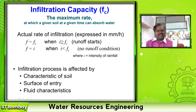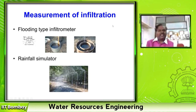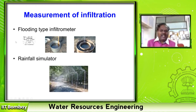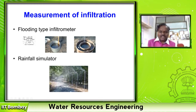Infiltration process is affected by characteristics of the soil, surface entry, and fluid characteristics. We measure this infiltration rate using a double ring infiltrometer. You will be measuring the depth of water entering only at the inner ring. The purpose of the outer ring is to avoid lateral dispersion — water at the center concentric ring goes exactly into the soil, while the outer ring handles lateral movement.